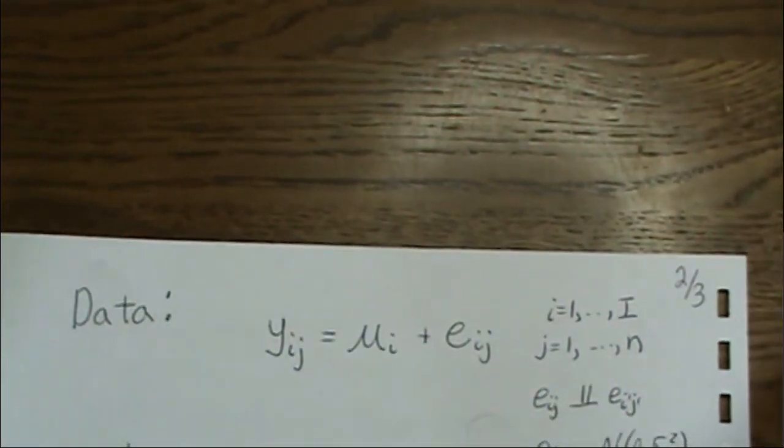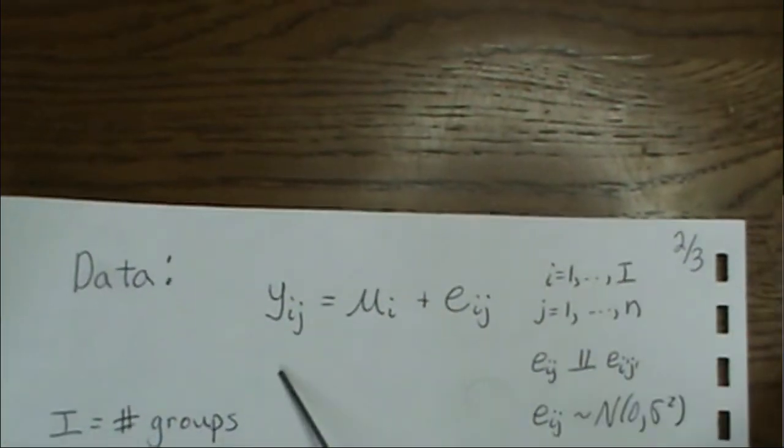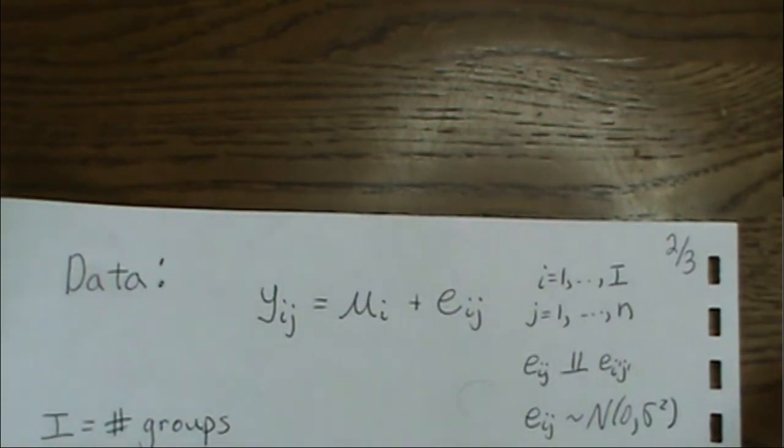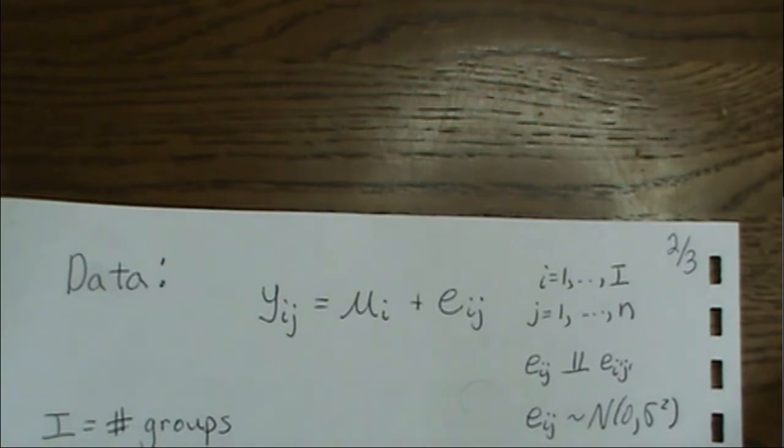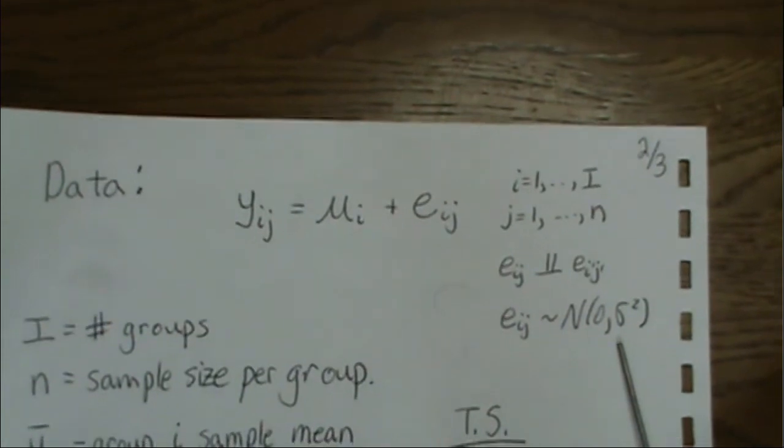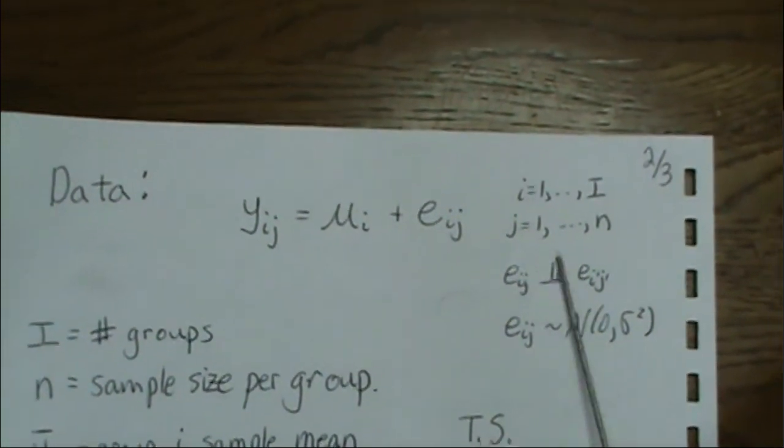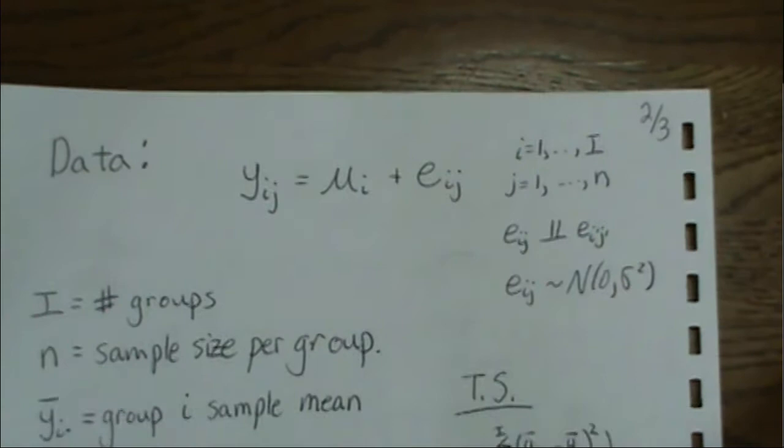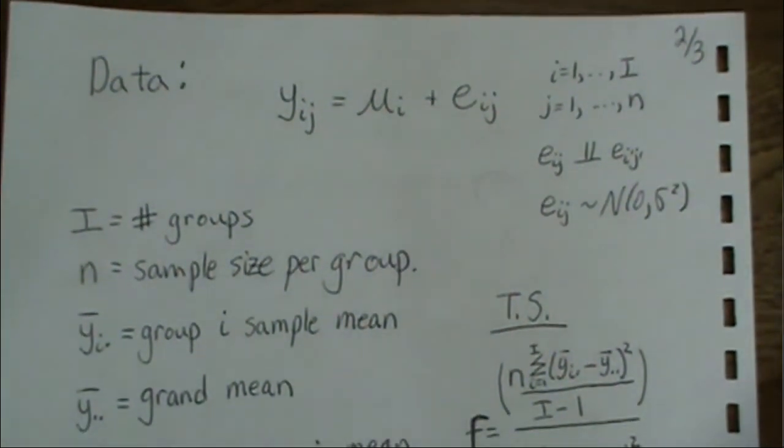So the setup is this. We have data from I different groups. It could be I different machines, I different varieties of barley that you're planting, or you have one barley with I different fertilizers. A lot of different settings. Our Y is some mean or some treatment effect with some random error. And the random error is normal, zero, sigma squared, and independent. There's a sample size of N within each group, and there's capital I different groups. So I is the number of groups, N is the sample size per group.